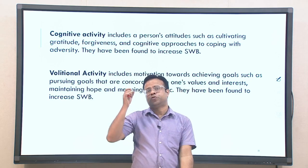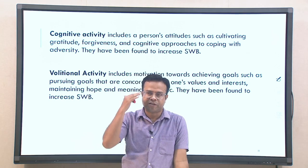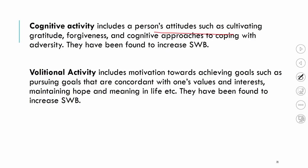The second category is cognitive activities — these are mostly mental activities that do not necessarily require going outside or performing physical actions. They relate to thought processes and attitudes. Cognitive activities include cultivating gratitude, forgiveness, and cognitive approaches to coping with adversity. For example, consciously shifting from pessimistic to optimistic thinking, or intentionally forgiving someone — these require mental effort. Many cognitive activities are associated with higher subjective well-being.